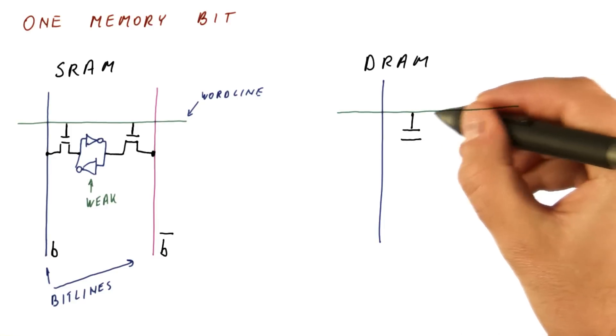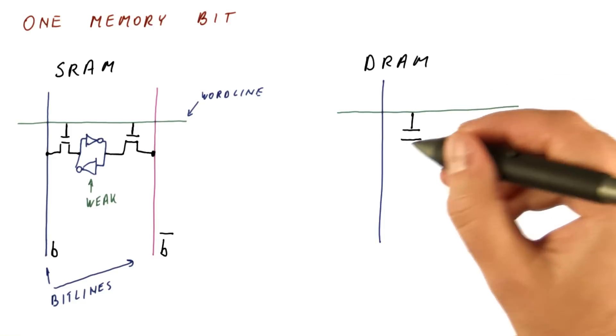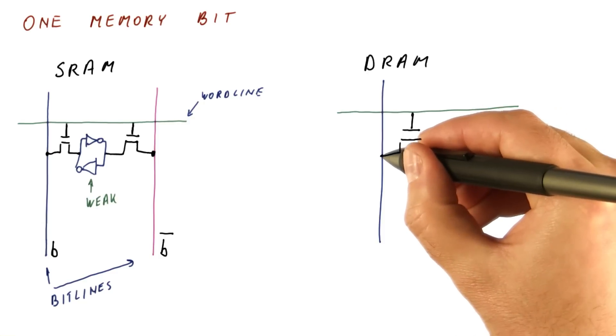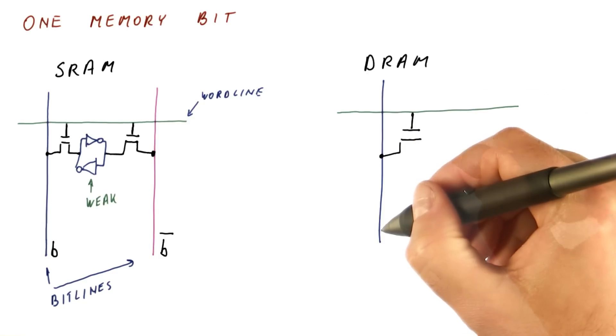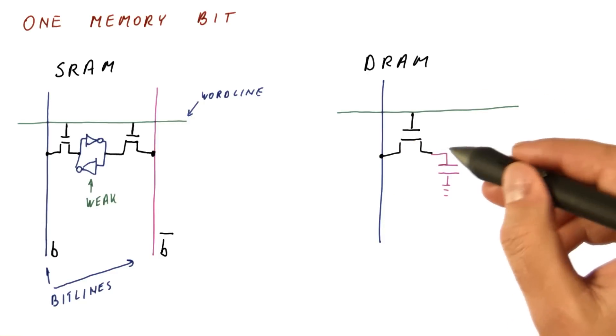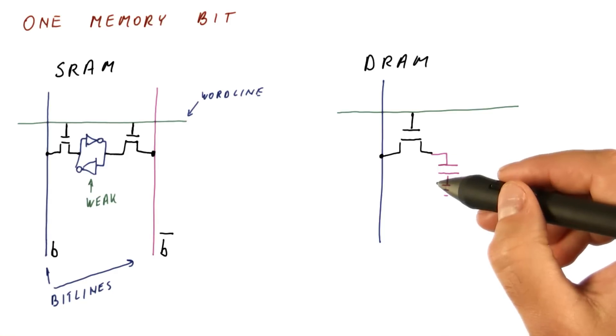In DRAM, we also have a transistor that is activated by the word line, and that connects the cell to the bit line. But we said that's the only transistor we have. The cell is made out of a simple capacitor here.